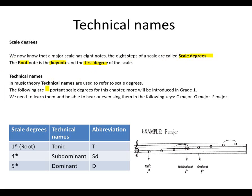Technical names. In music theory, technical names are used to refer to scale degrees. We refer to scale degrees using technical names. The following are important scale degrees for this chapter - more will be introduced in grade 1. We need to learn them and be able to hear or even sing them in the following keys: C major key or the G major key, even in F.